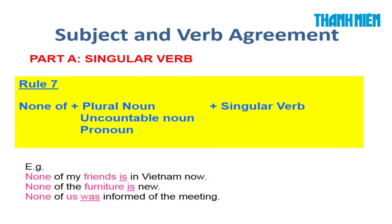Rule number 7: 'None of' — khác với 'neither' ở chỗ 'none of' dùng cho ba người hoặc ba vật trở lên. Sau 'none of' dùng plural noun, uncountable noun, hoặc pronoun, và động từ vẫn là singular verb. Ví dụ: 'None of my friends is'; 'None of the furniture is'; 'None of us was' — tất cả đều chia động từ số ít.